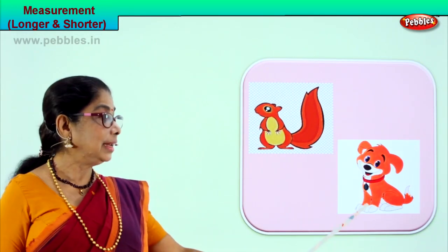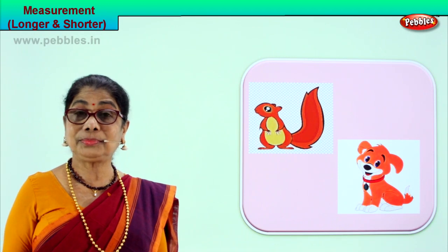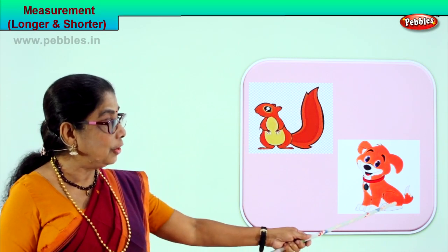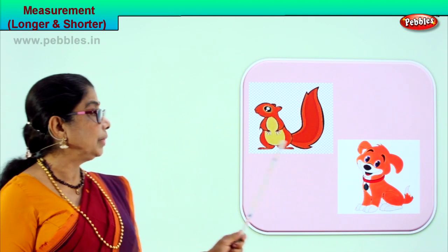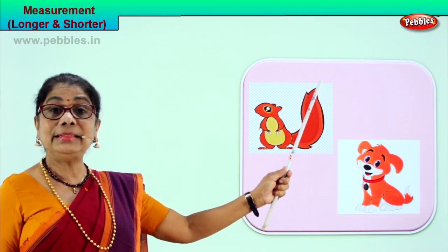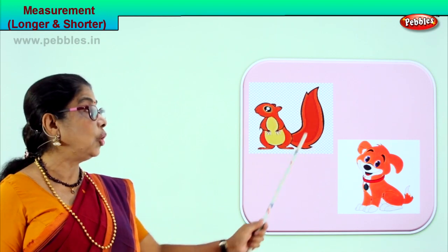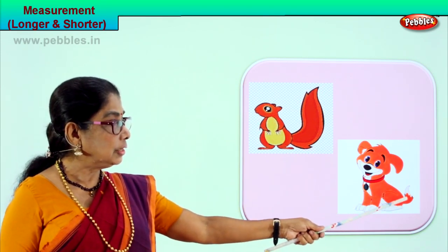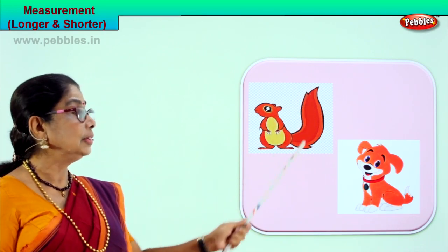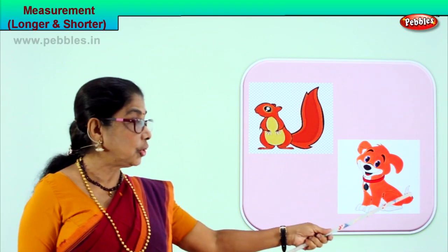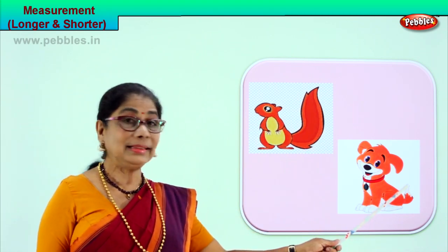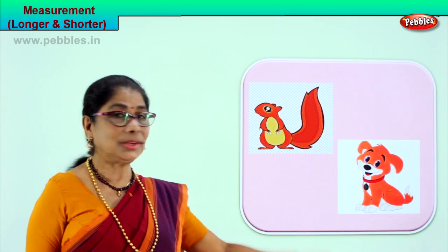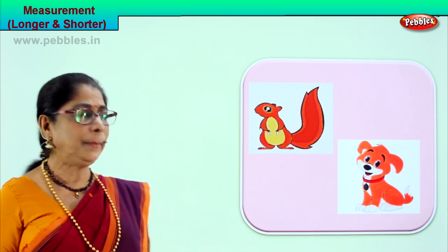Look what we have here. There is a little dog and there is a squirrel. Look at the length of the tail. The puppy has got a tail, and the squirrel has got a nice long tail. The squirrel's tail is longer than the dog's tail, or we say the dog's tail is shorter than the squirrel's tail. Longer, shorter — did you understand? Look at the animal tail. Shorter, longer. Let's look at another picture now.